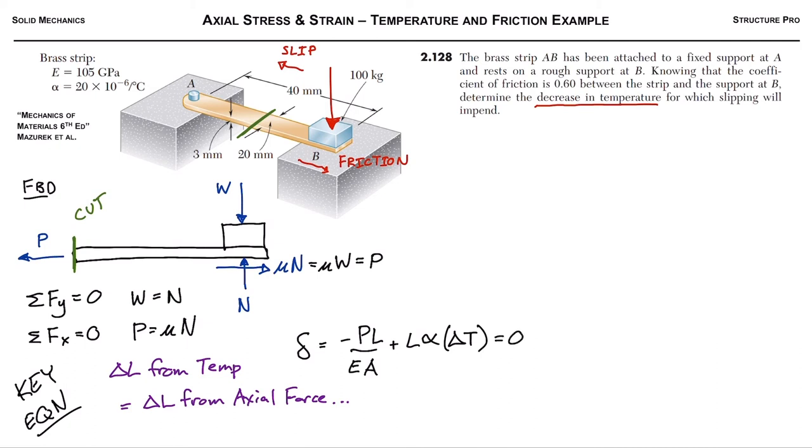Now this ΔL equals zero the way I've written it here. It's assuming a positive change in temperature, and if we have a negative change in temperature which the question is asking about, it just flips all the signs. So we can rewrite that, we can put the PL over AE onto the other side of the equation, we can isolate for ΔT, and we find that ΔT is equal to μmg over EA times our coefficient of thermal expansion.